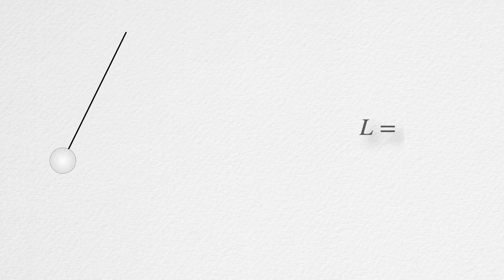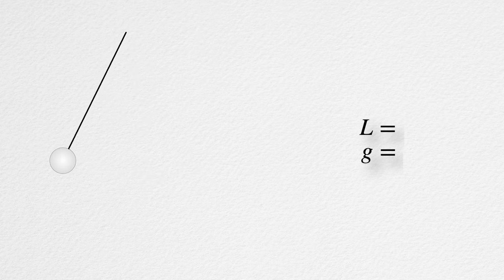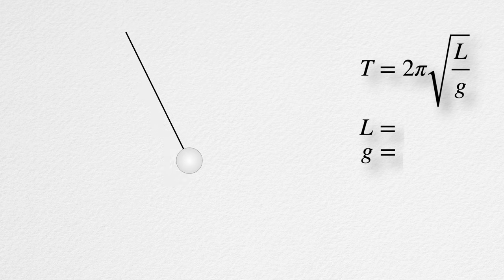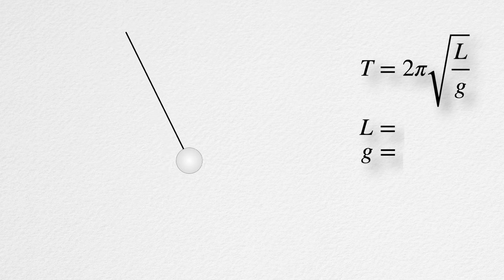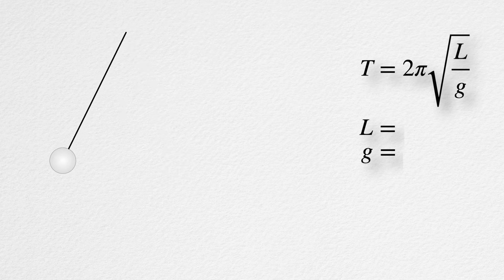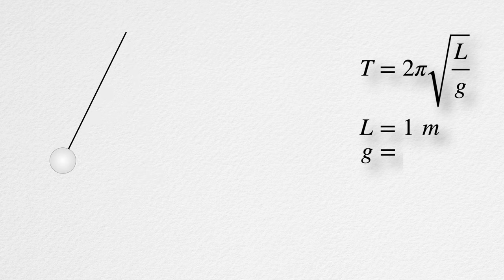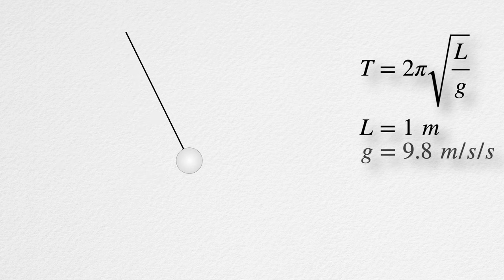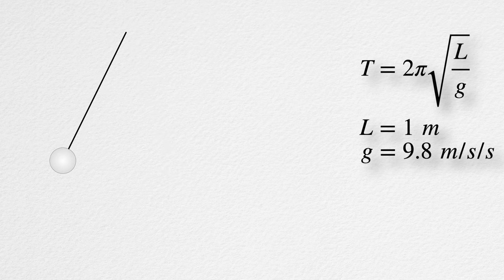The same clocks we've been using for centuries to keep time. We perfectly know that the time period of the pendulum depends on only two variables: the length of the pendulum and the acceleration of freefall. There is an equation describing the time period of the pendulum. Using this equation, we can calculate the pendulum time period. For instance, when we have a one-meter-length pendulum, considering the acceleration of freefall on Earth as 9.8 meters per second squared, the period of such a pendulum is about 2 seconds.